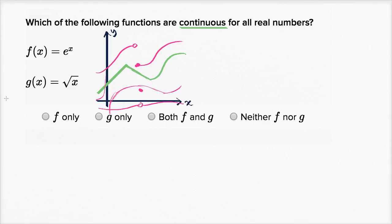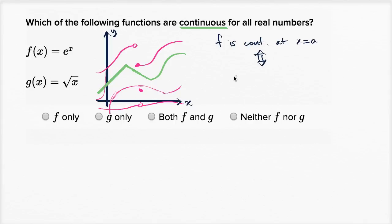Now if you want the more mathy understanding of that — and we've looked at this before — we say that a function f is continuous at some value x equals a, if and only if the limit of f of x as x approaches a is equal to the value of the function at a.